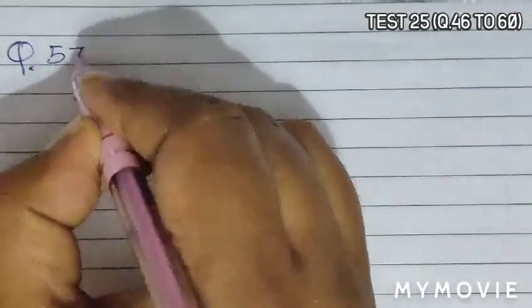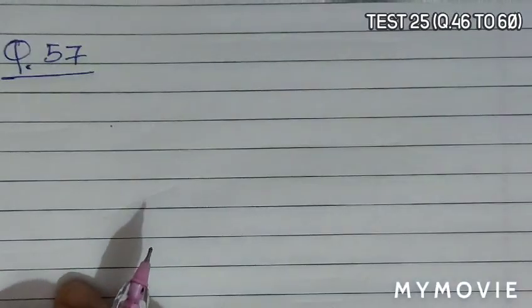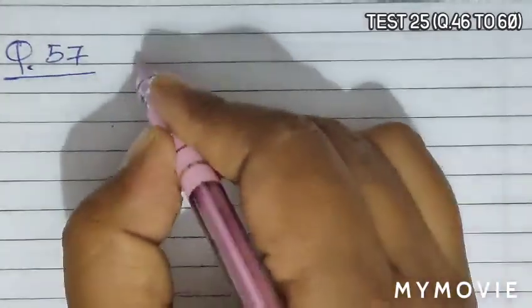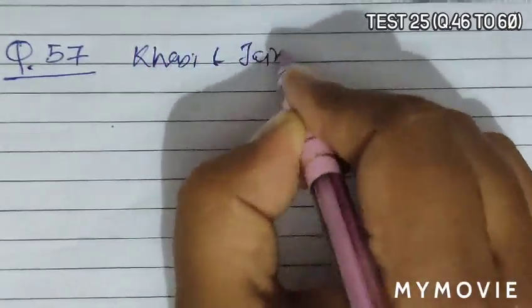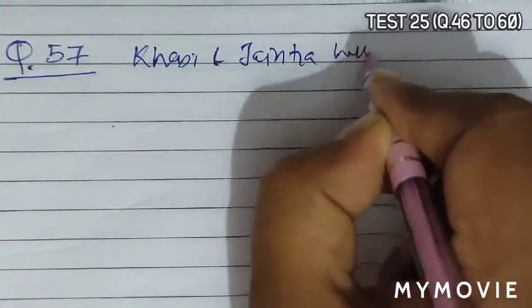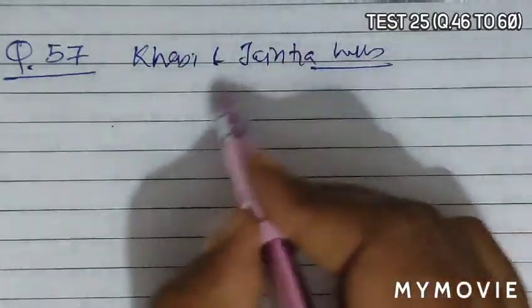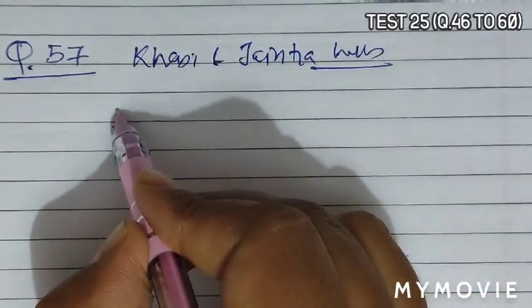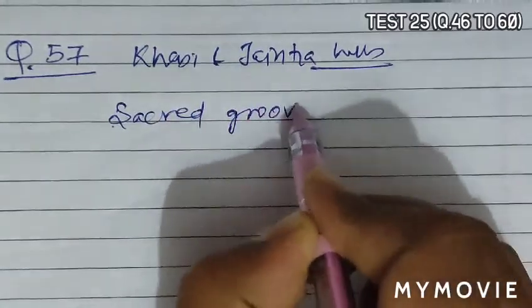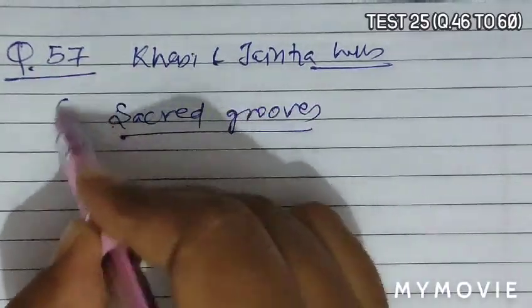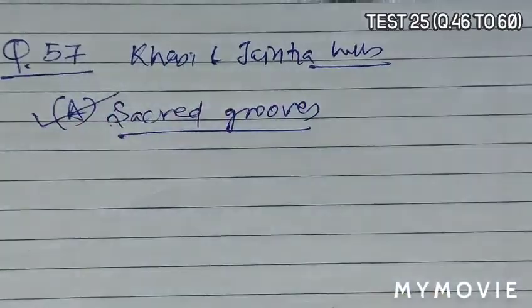Next is question 57. Question 57 asks that Khasi and Jaintia hills of Meghalaya are what. Just we have studied that Khasi and Jaintia hills are found in Meghalaya and they are examples of sacred groves. So option A becomes the correct answer.